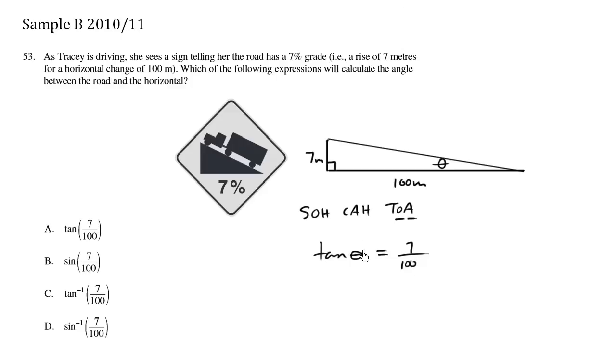Now we are interested in theta. We want to calculate the angle. We're not interested in calculating tan theta. We want to calculate theta itself. So how do we solve for theta? Now we have an equal sign here. So we need to isolate theta all by itself.